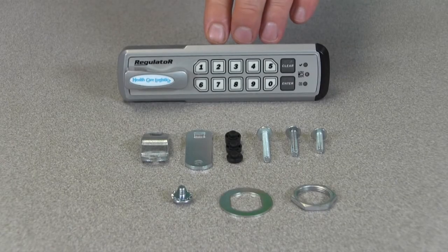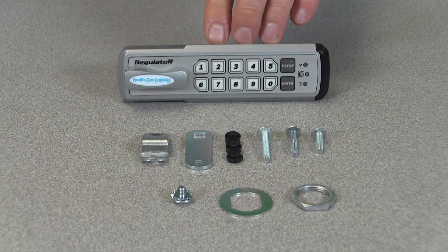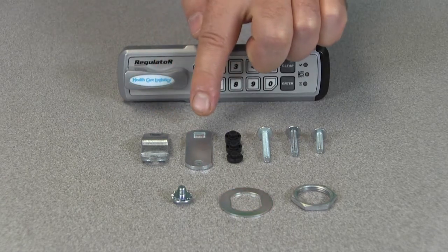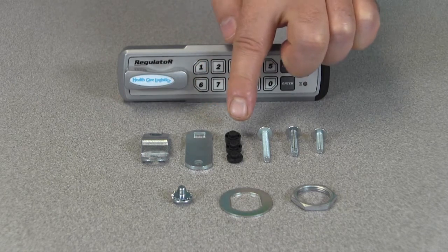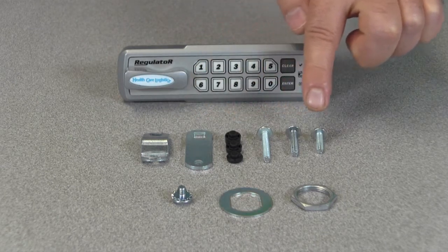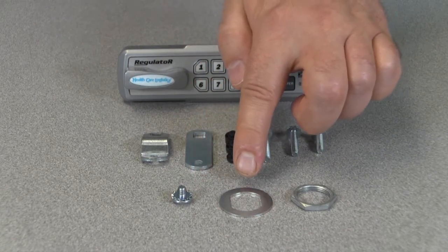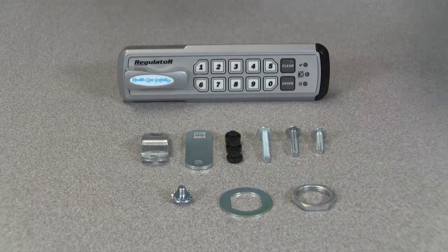When you open the box, you will see your regulator lock, one offset locking cam, one straight locking cam, flexicam bushings, various bolt sizes, a bolt for securing the cam, a packer piece, and a locking nut.